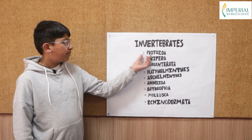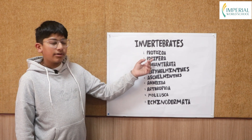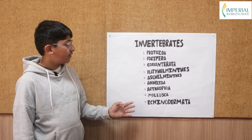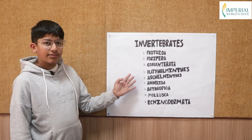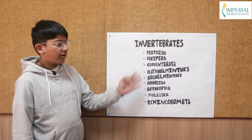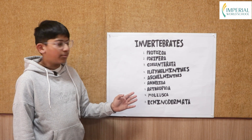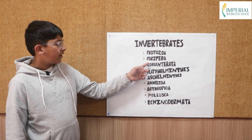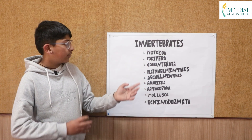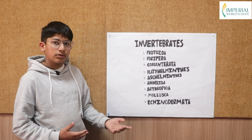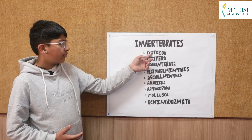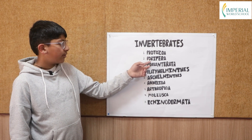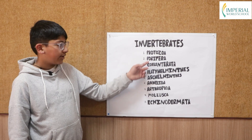Protozoa are the most primitive invertebrates. They are single-celled, and an example of a protozoan is an amoeba. Next, in Porifera, they have numerous pores in their body, and unlike protozoa they are multicellular. An example of Porifera is Sycon.